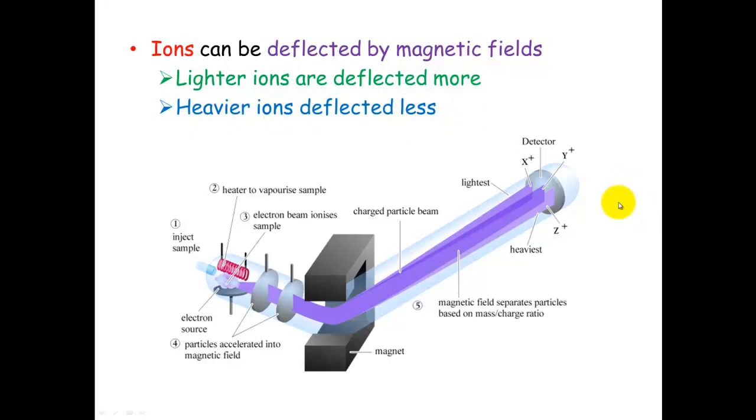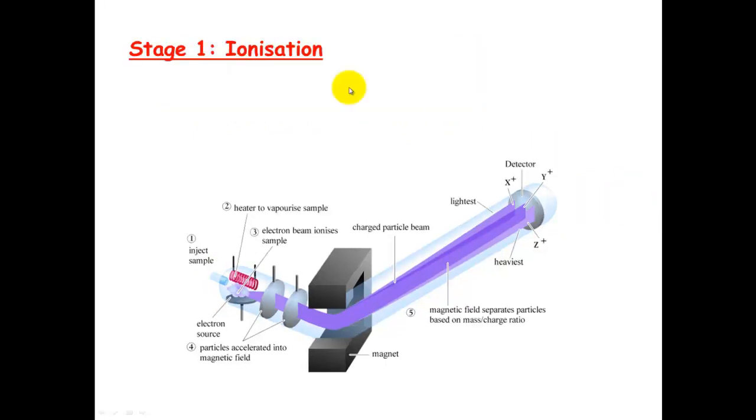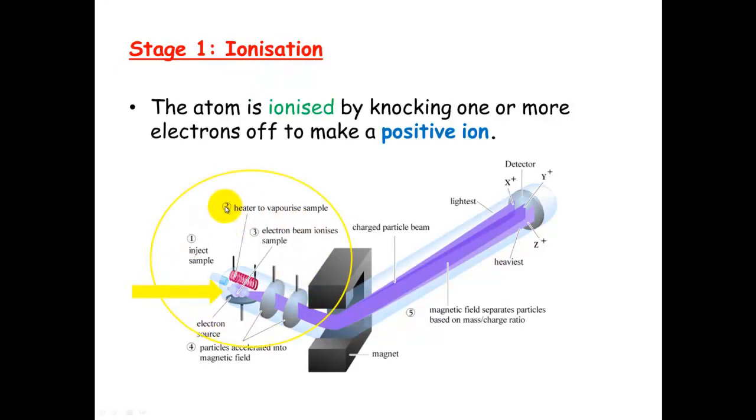So let's look at it in detail. Stage 1 of mass spectroscopy involves ionization. We have to turn the atoms into ions. And this is where this happens, right at the front of the unit. The atom is formed into an ion by using electrons to knock off one or two electrons to make it a positive ion.